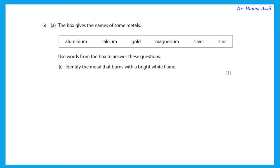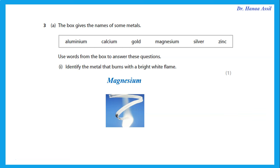Question 3 gives a list of some metals. Identify the metal that burns with a bright white flame. You have to know that the metal that burns with a bright white flame is magnesium. Remember, when we talk about flame tests, magnesium does not give a color — it gives a bright white flame.